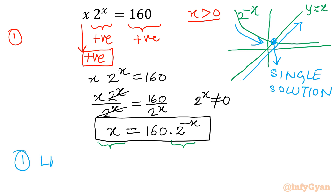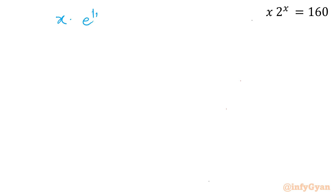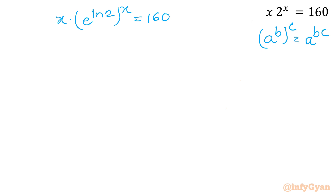Now let's find the single solution using the first method: the Lambert W function. I will write x times 2 raised to the power x equals 160. Now I can use the exponential property: x can be written as e raised to the power ln x, and 2 can be written as e raised to the power ln 2. So I write x times e raised to the power ln 2, whole to the power x, equals 160. Applying the exponent property — (a to the power b) to the power c equals a to the power b times c — this gives us x times e raised to the power x ln 2 equals 160.